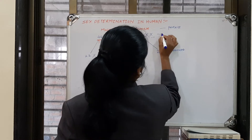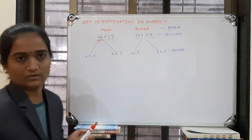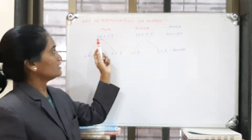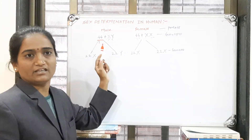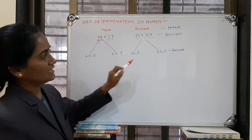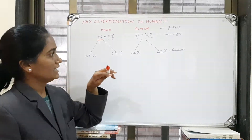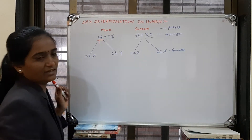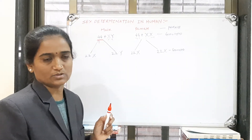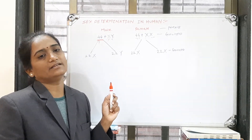If we consider parents — the male with genotype 44+XY and the female with genotype 44+XX — gametes are separated. Four types of gametes will be obtained. We now determine how a son or daughter will be produced and how the sex of the baby is determined by genotype.